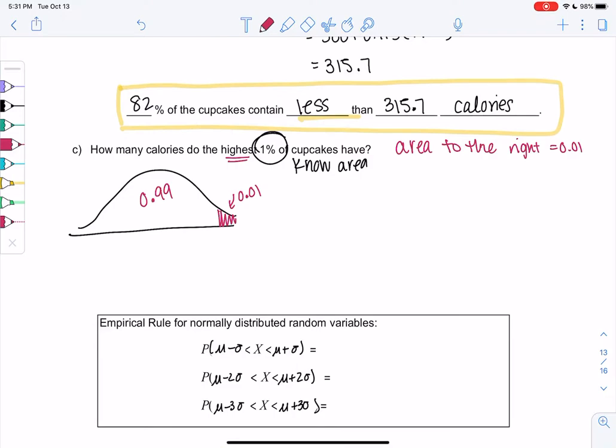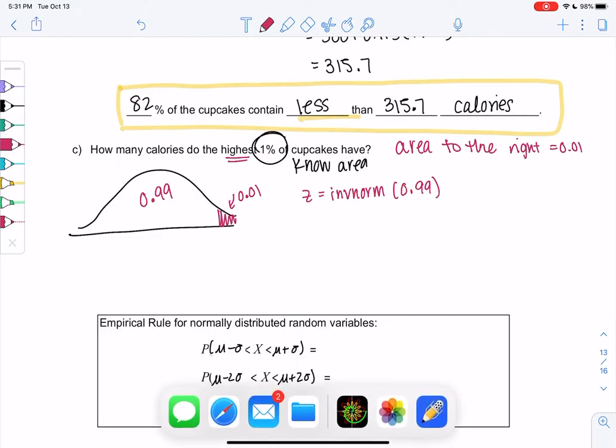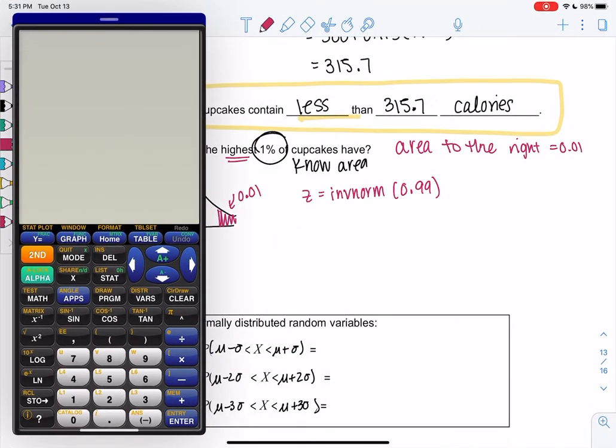We'll just follow the same pattern. We'll do inverse norm to find the z-score, because we're going backwards. It'll be area to the left, 0.99. Inverse norm of 0.99, and I get a z-score of 2.326.